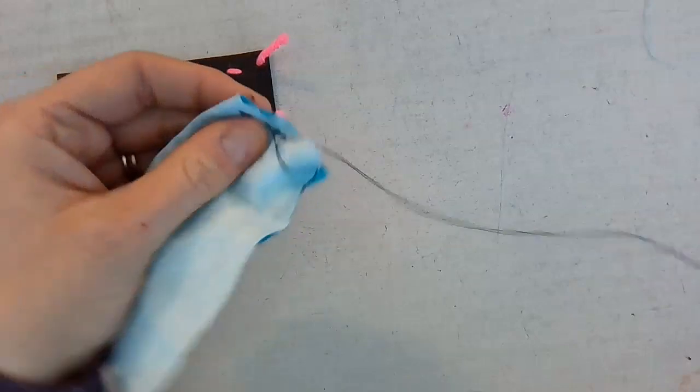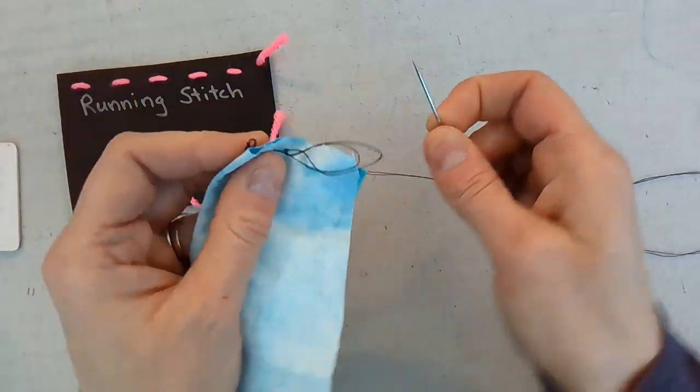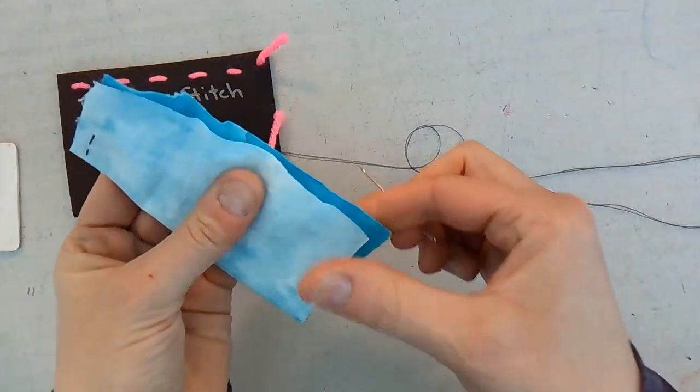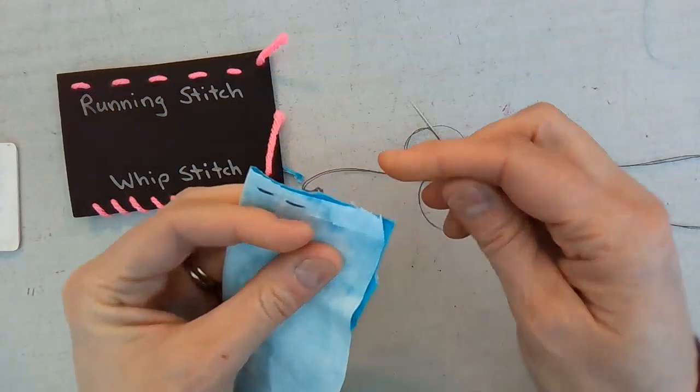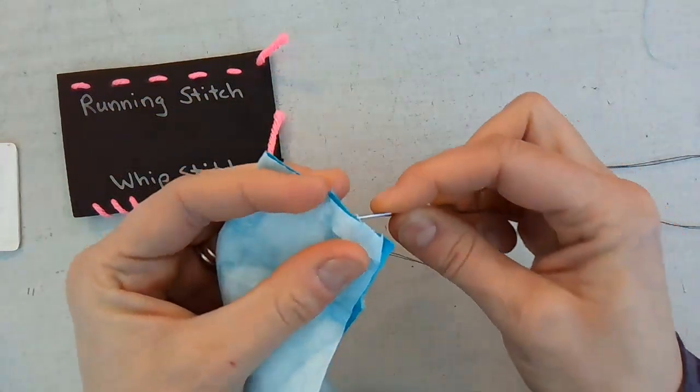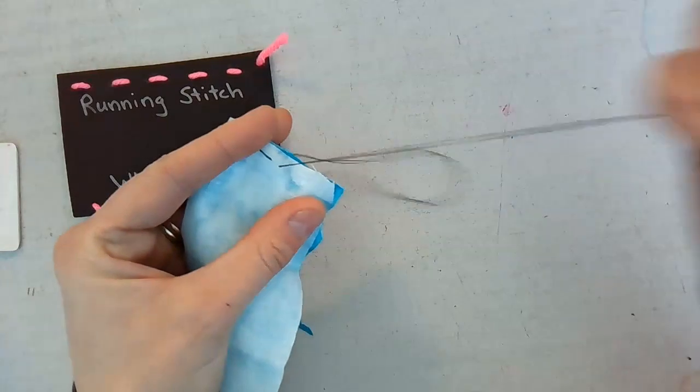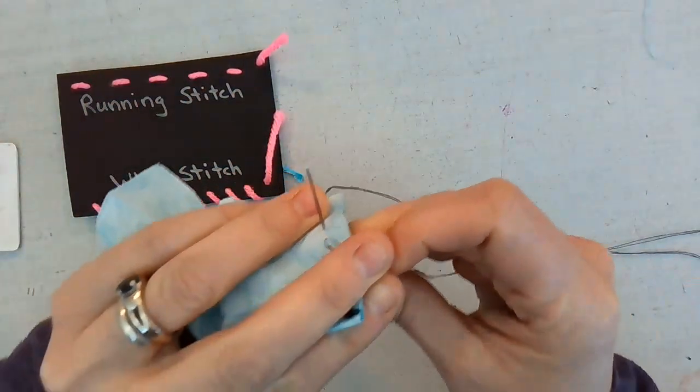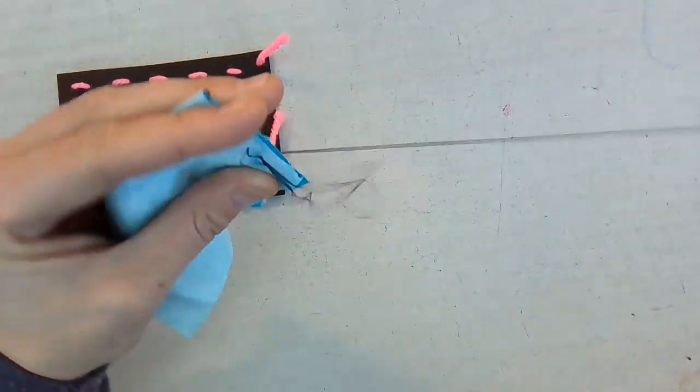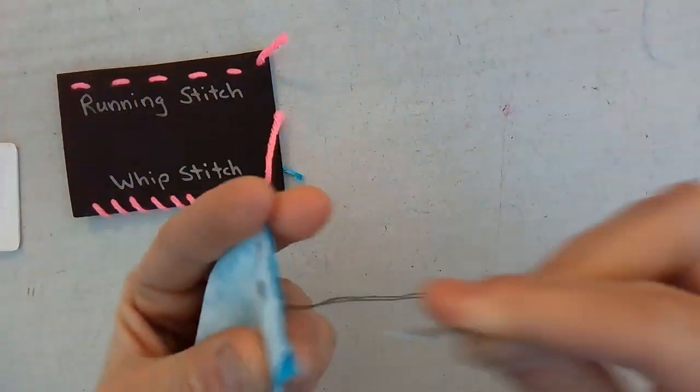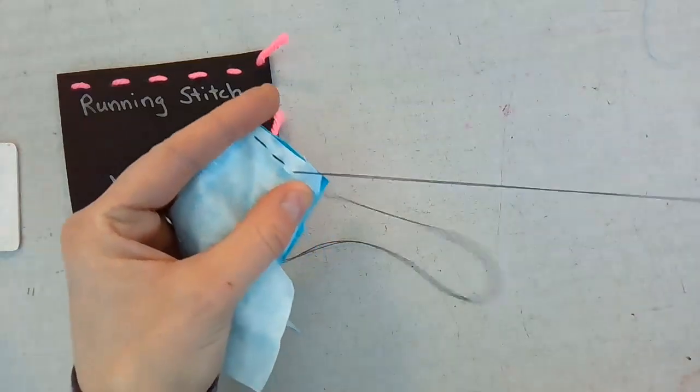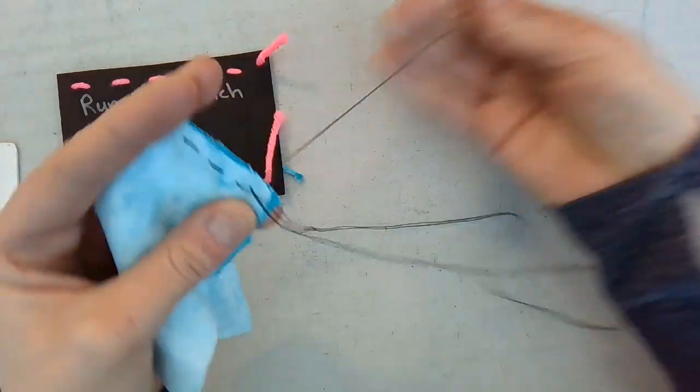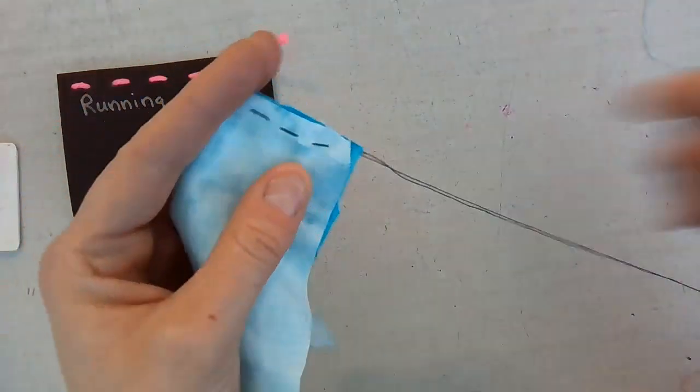And continue to use the running stitch. You have to go nice and slowly. Keep it away from your fingers. It gets caught on the fabric. You just have to go slow. Keep it nice and straight. And continue all the way around until you get to the last side and halfway.